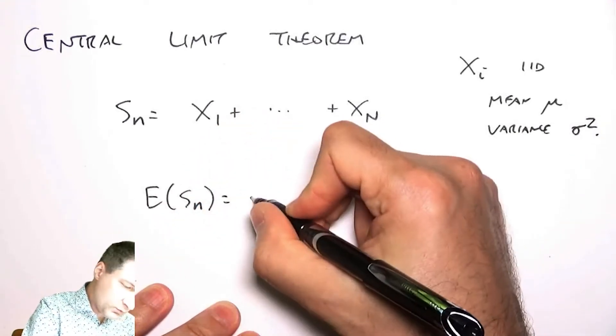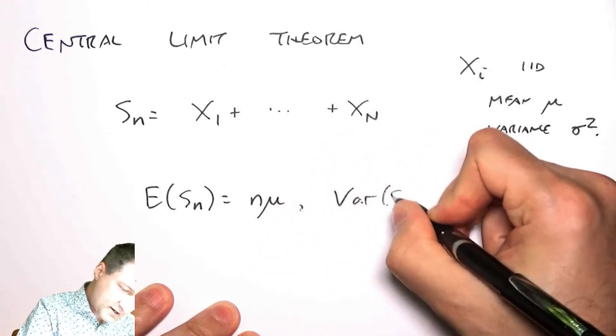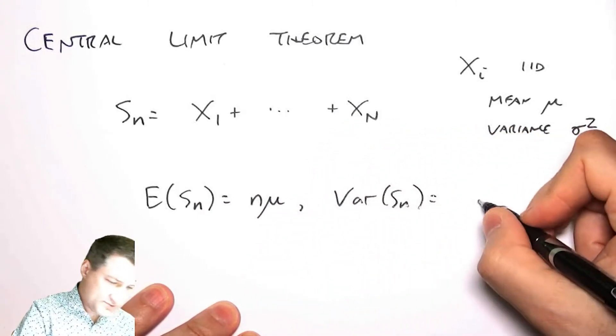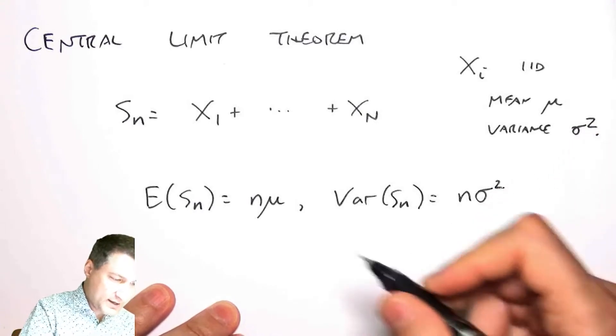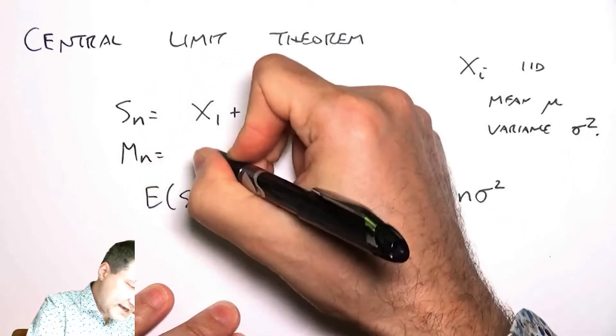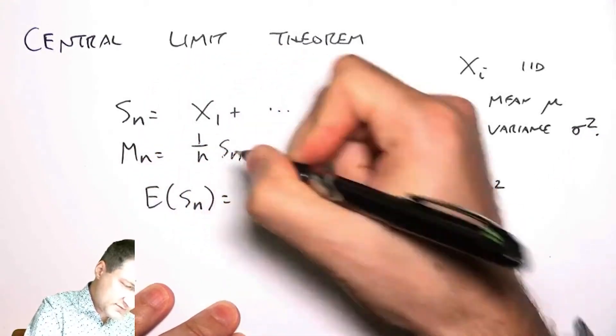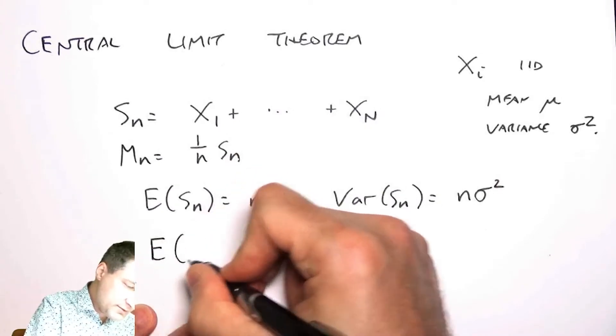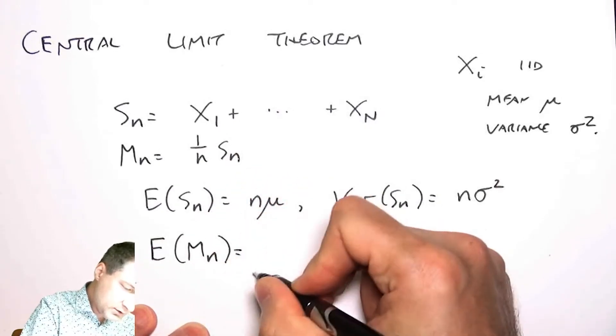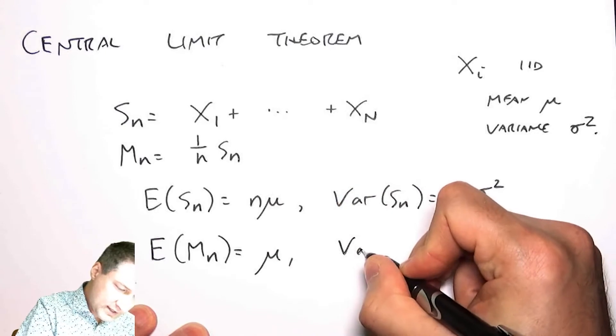If we define the mean as the average of these random variables, we showed that the expected value of the mean was mu and the variance of the mean was one over n sigma squared.